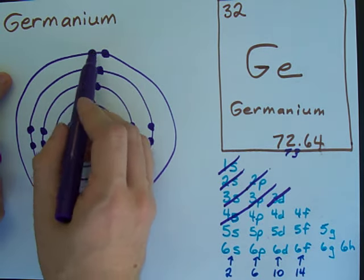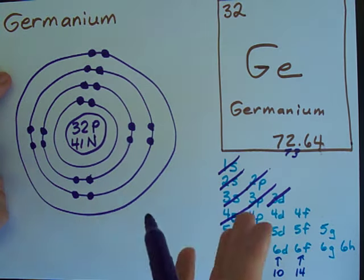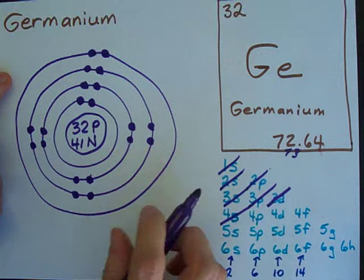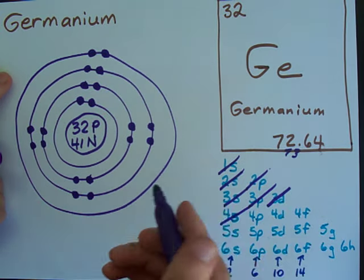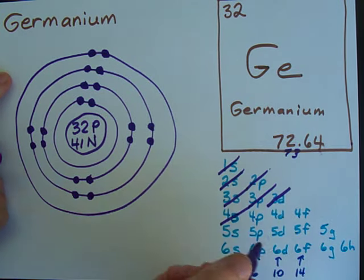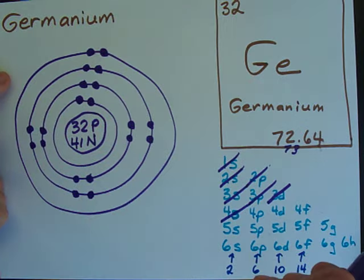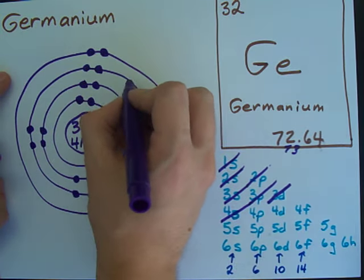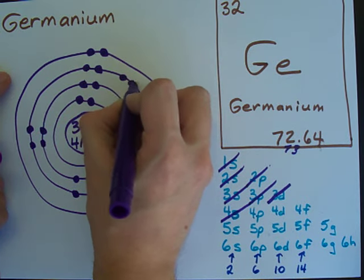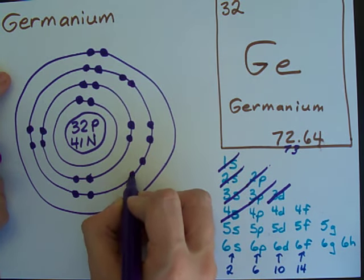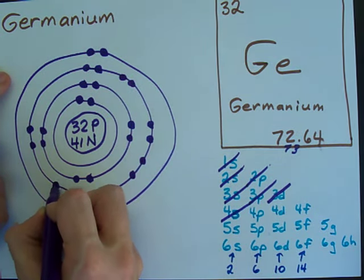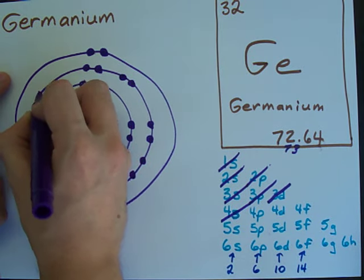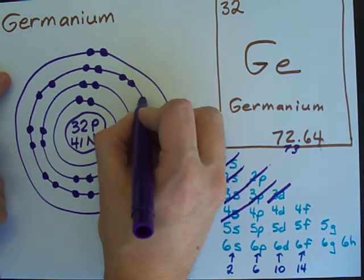Two electrons go into the fourth shell before you can put any into the third shell. It's a little weird, eh? But according to the order of filling that I have down here, that's the way it is. So, I'm putting 10 in my third shell now. 1, 2, 3, 4, 5, 6, 7, 8, 9, 10. Almost ran out of space.